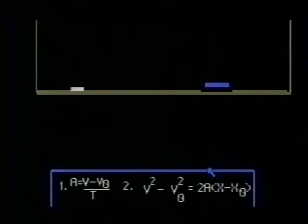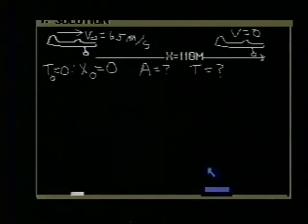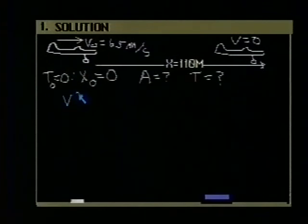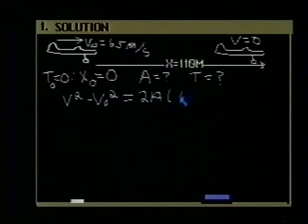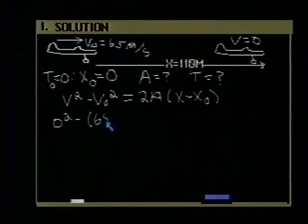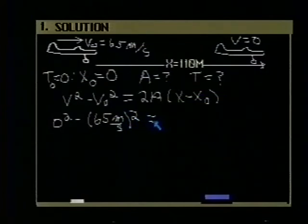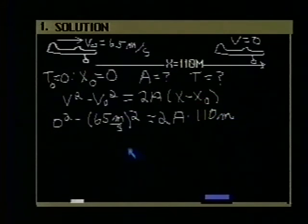Let's go back and rewrite that equation. We'll write that v squared minus v0 squared is equal to two times the acceleration times the final displacement minus the initial displacement. Plugging in our values, the final velocity is zero minus the initial velocity, 65 meters per second. That quantity is squared. Is equal to two times the acceleration times the final displacement, 110 meters minus the initial displacement which is zero.